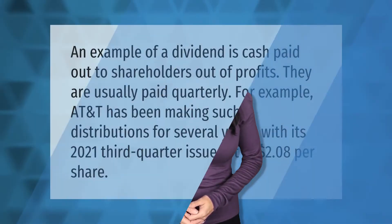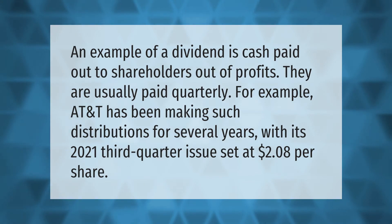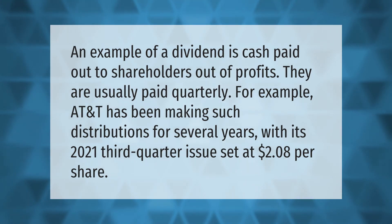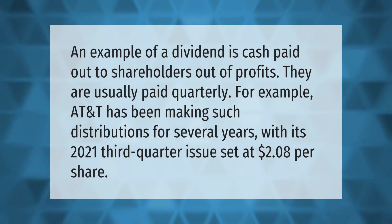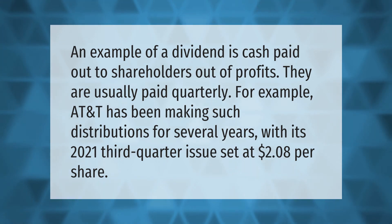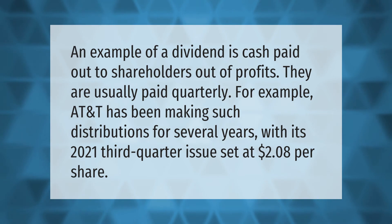An example of a dividend is cash paid out to shareholders out of profits. They are usually paid quarterly. For example, AT&T has been making such distributions for several years, with its 2021 third quarter issue set at two dollars and eight cents per share.